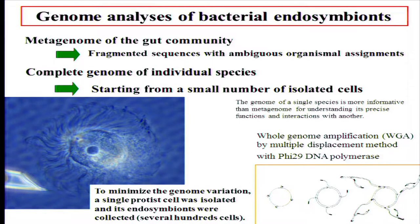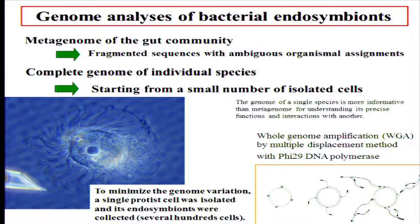We prefer to determine the complete genome of individual species, but we are obliged to start from a small number of isolated cells. In order to minimize genome variation, single protist cells were first isolated, and then several hundred cells of their symbionts were collected manually. We amplify the genome sequence by multiple displacement amplification methods, and apply the amplified genome for genome sequencing.